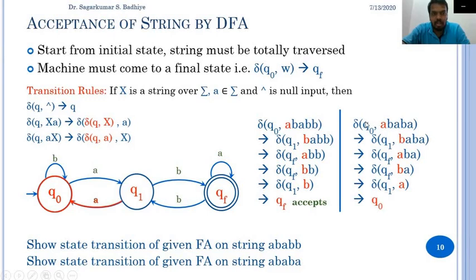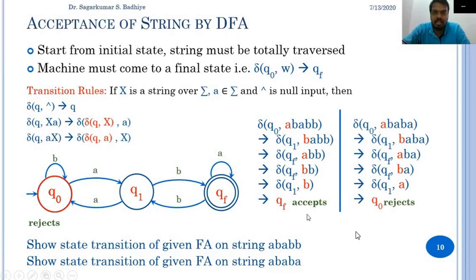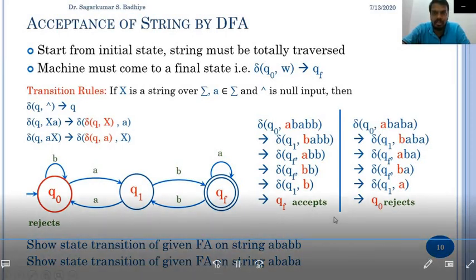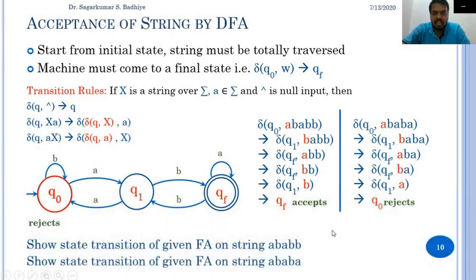The automata started from the initial state and traversed the complete string, but at the end it is not reaching the final state — it is in some intermediate state q0. So this particular string a b a b a is rejected by the given deterministic finite automata. For any string to be accepted by the deterministic finite automata, these two conditions must be satisfied. In the next class we'll look at more examples on deterministic finite automata. Thank you.